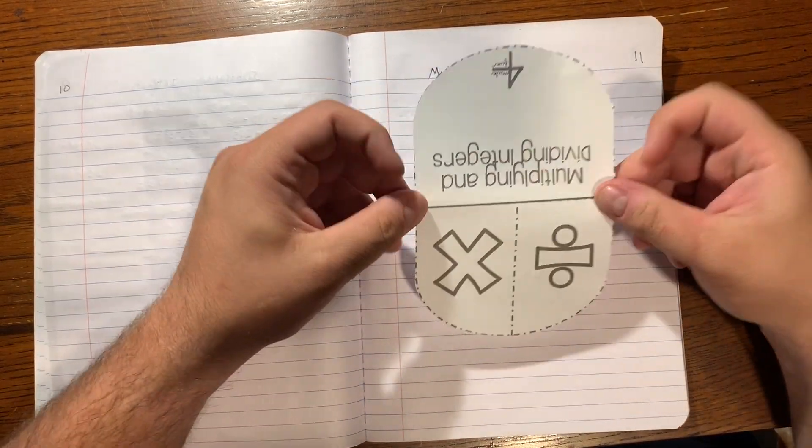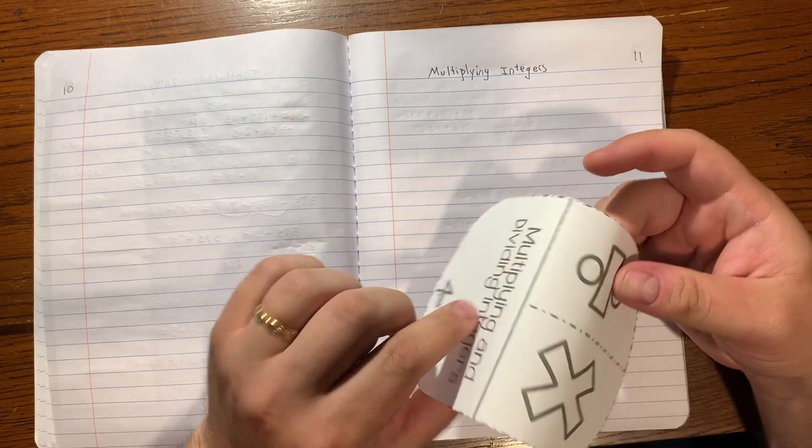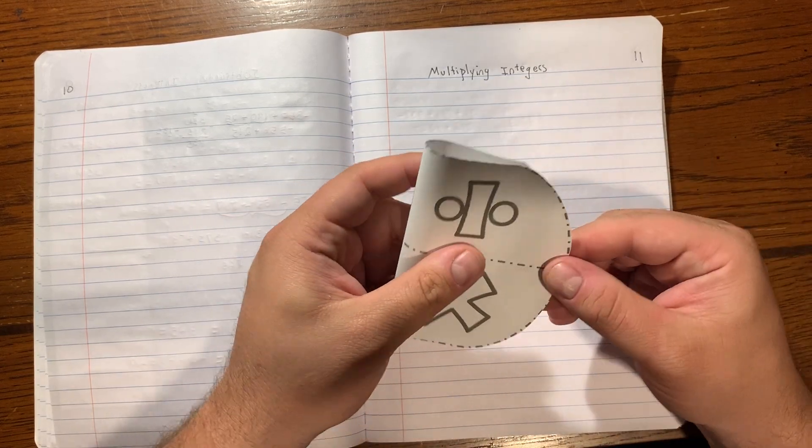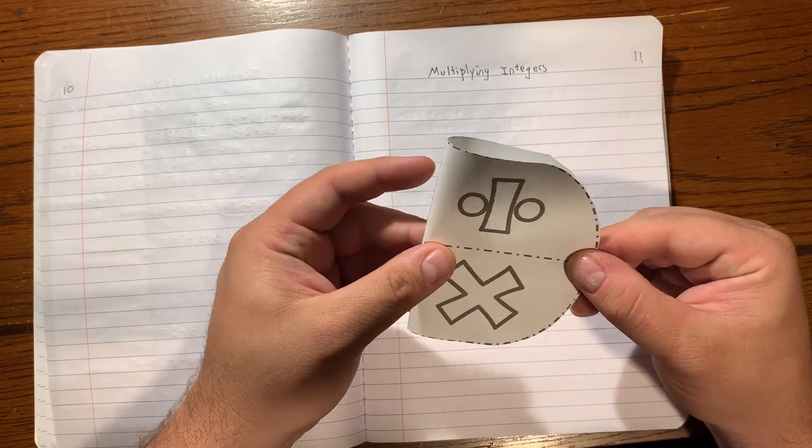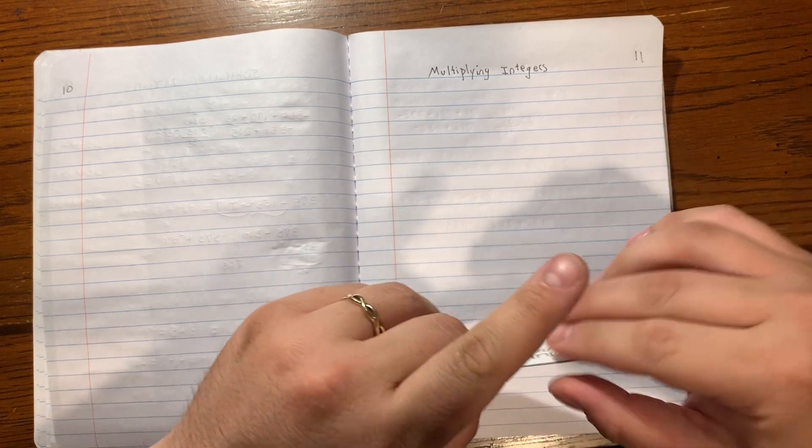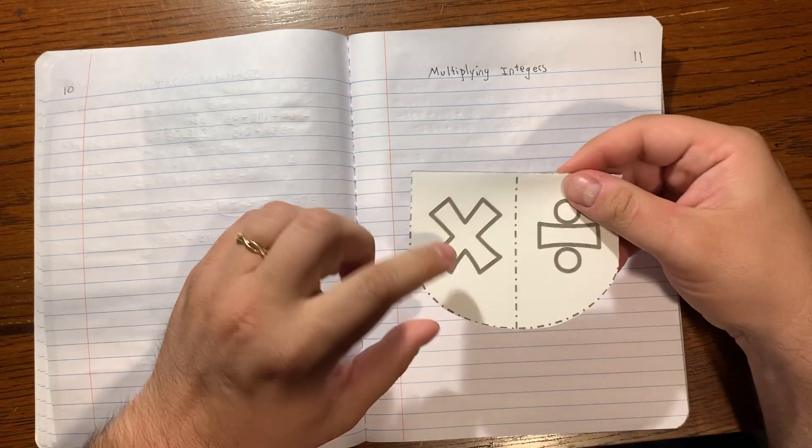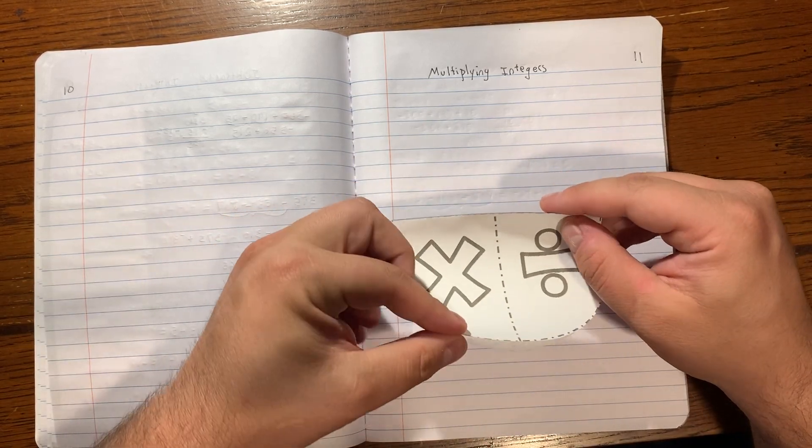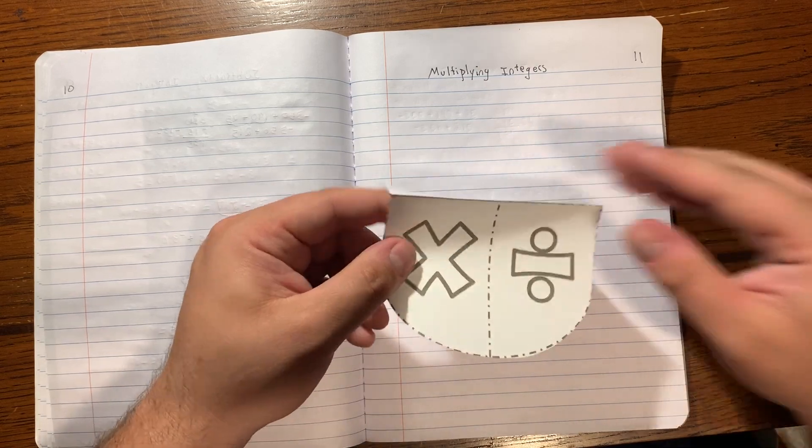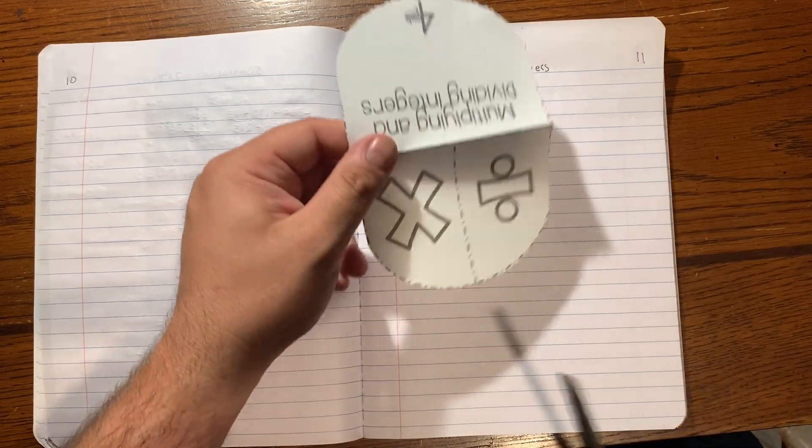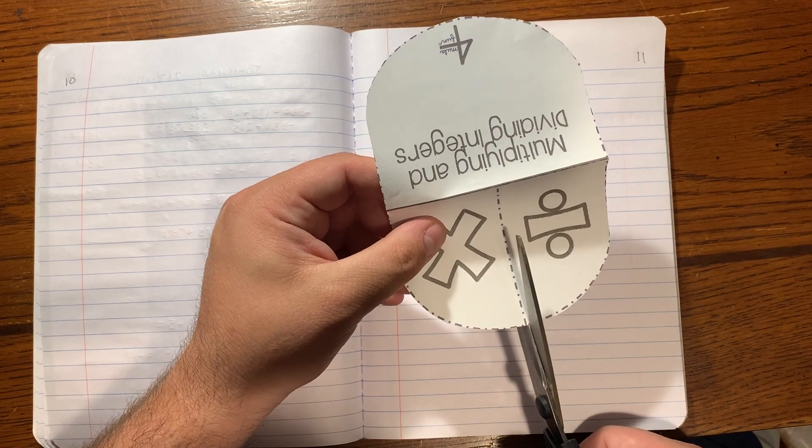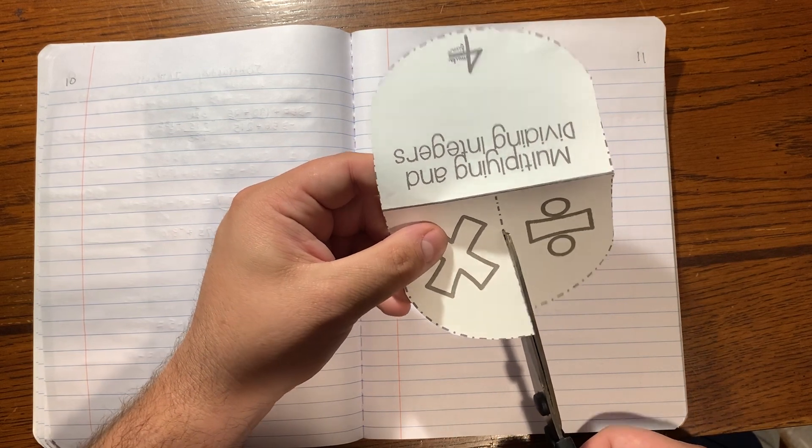All right, now that you have one of those cut out, you'll notice that they are in a separate way. So what you're going to do is actually fold this along the solid line. We want to be able to open up just one of these at a time, so if you haven't already, you're going to cut along this dashed line as well.